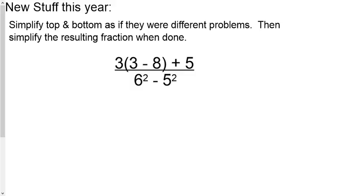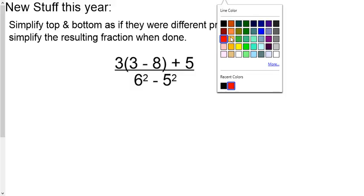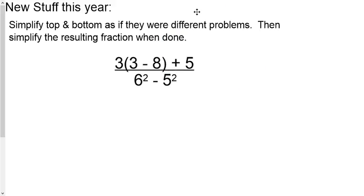So I want you to treat these two things like they were two totally different problems. And to get that point across, I'm going to highlight the top in yellow. Okay? And I'm going to copy it right over here to the left side of the problem. Again, treat it as if it's its own problem. So, parentheses first. That would be 3 minus 8. We'll make it negative 5. I'm going to leave that in parentheses there.